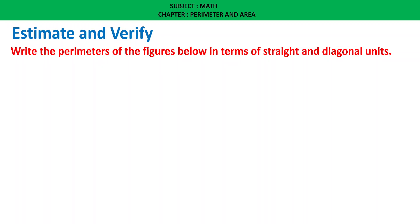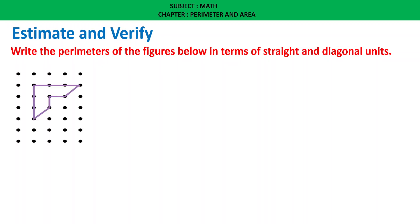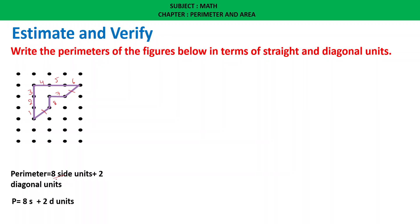Write the perimeters of the figures below in terms of straight and diagonal units. For the first figure: counting straight units — 1, 2, 3, 4, 5, 6, 7, 8 straight units. Then the diagonal units: 1, 2 diagonal units. So total perimeter equals 8 side units plus 2 diagonal units.